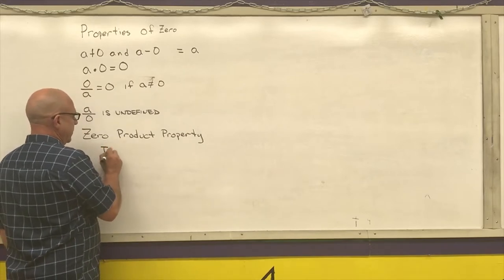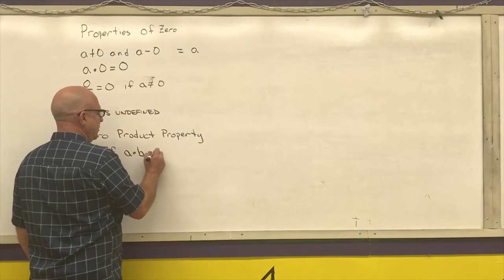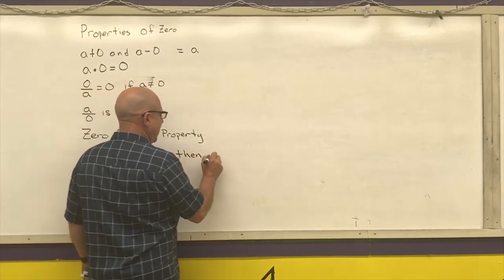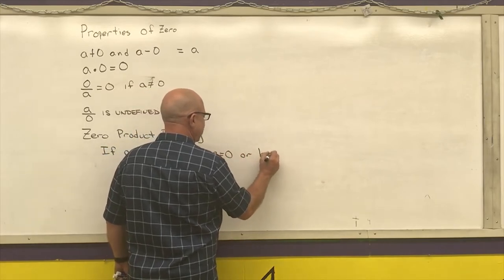And that states, if A times B is equal to 0, then A is equal to 0, or B is equal to 0.